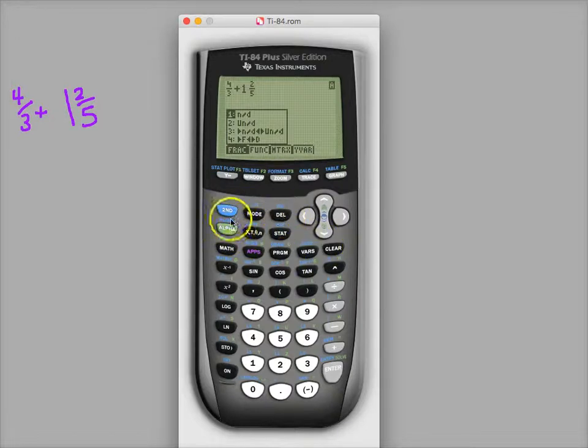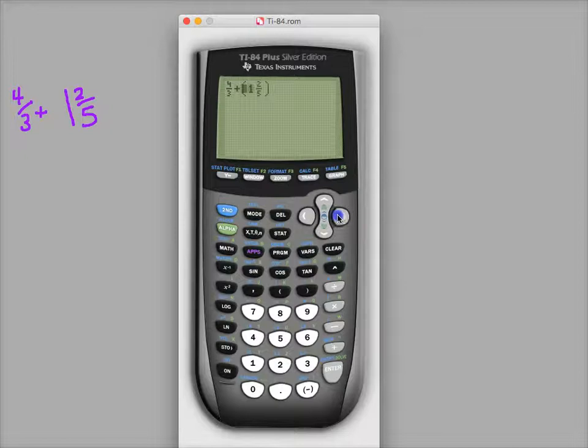So I'm gonna kind of quit out of that, but anyway I've got four thirds plus one and two fifths because I typed it all in. Hit enter and it makes 41 over 15.